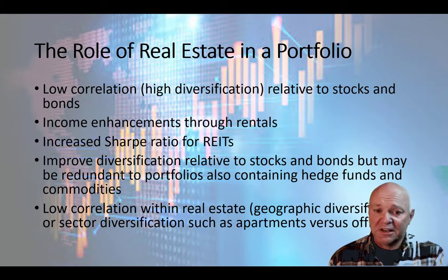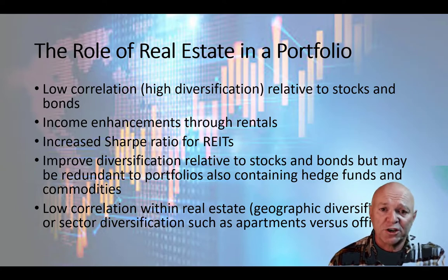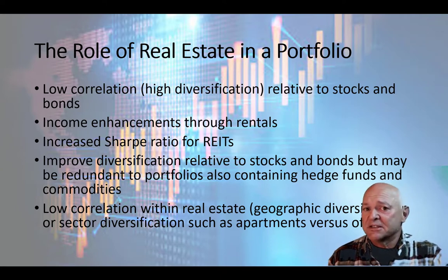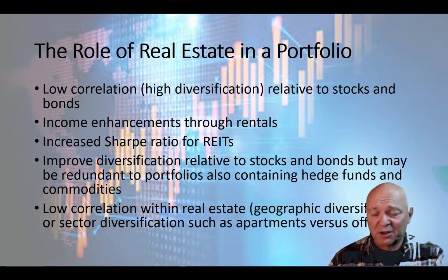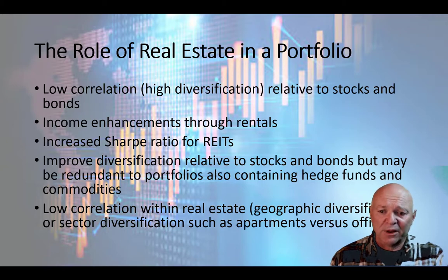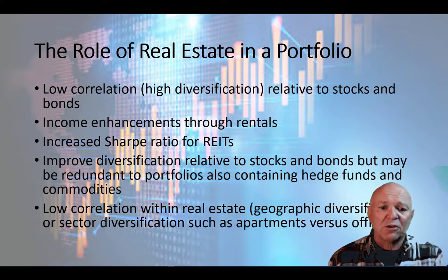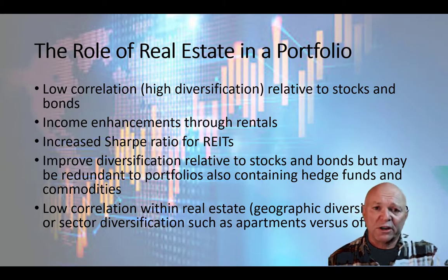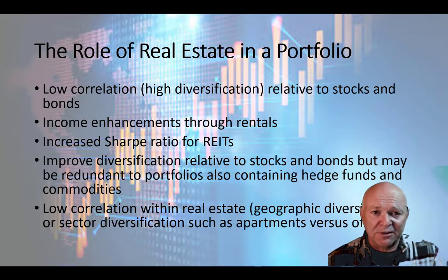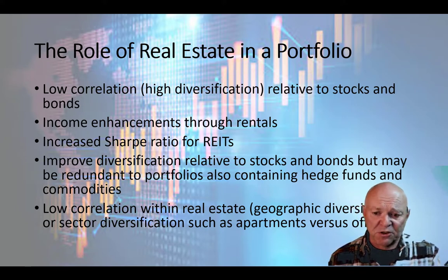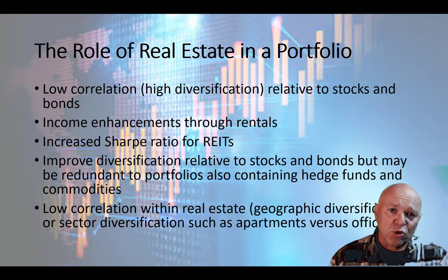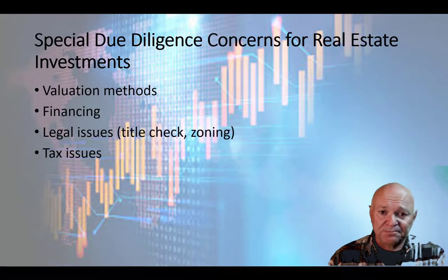Having real estate in a portfolio is generally a good thing because of its low correlation with stocks and bonds, and the regular yield received through rental properties. Because real estate investment trusts tend to have low standard deviation and average returns, they increase the Sharpe ratio and improve diversification relative to stocks and bonds. However, if you have other investments like hedge funds or commodities providing the same exposures, real estate may be redundant. There is typically lower correlation within the real estate category itself — between commercial versus residential, and between different geographic regions.